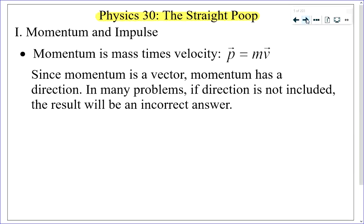Quite often in Physics 20, you might have gotten used to not including direction when doing calculations or analysis. A lot of the time in Physics 20 you still get the right answer — your answer is just opposite to what it should be. You can't get away with that in Physics 30. If direction is not included, you're very likely to get an incorrect result.